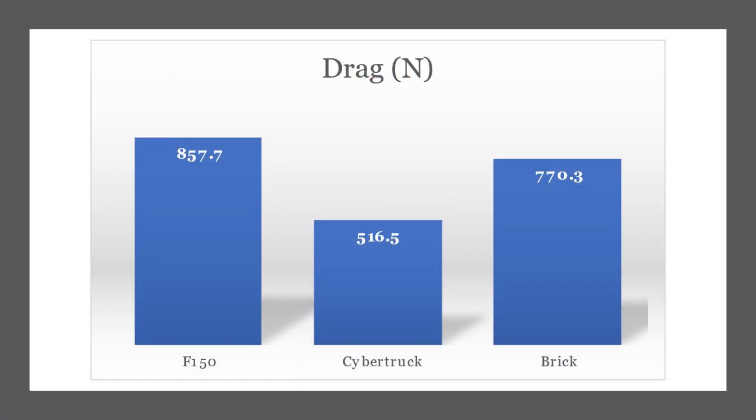Now that the simulation procedures have been outlined, I am going to share the results I achieved. This chart shows the calculated drag forces from the RANS simulation. You can see that the Cybertruck is the most aerodynamic and the F-150 is the least — even less than the brick. The likely reason for this has to do with the behavior of the wake. As the flow separates off the roof of the F-150, it creates a region with many eddies, then another one after the tailgate. I think that this double eddy effect is what makes it less aerodynamic than the brick.